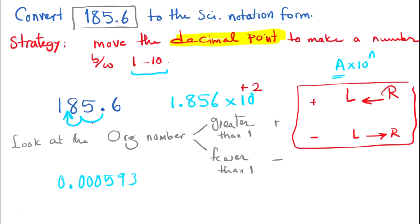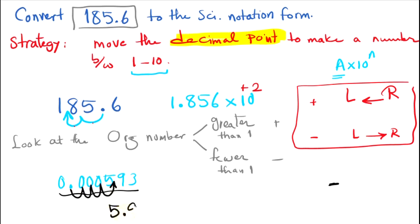Let's try a small number: 0.000593. I want to convert this to scientific notation. This number is smaller than 1, so I predict the exponent will be negative. I move the decimal point to get 5.93, which is between 1 and 10. I count the moves: one, two, three, four. So the answer is 5.93 times 10 to the negative 4.